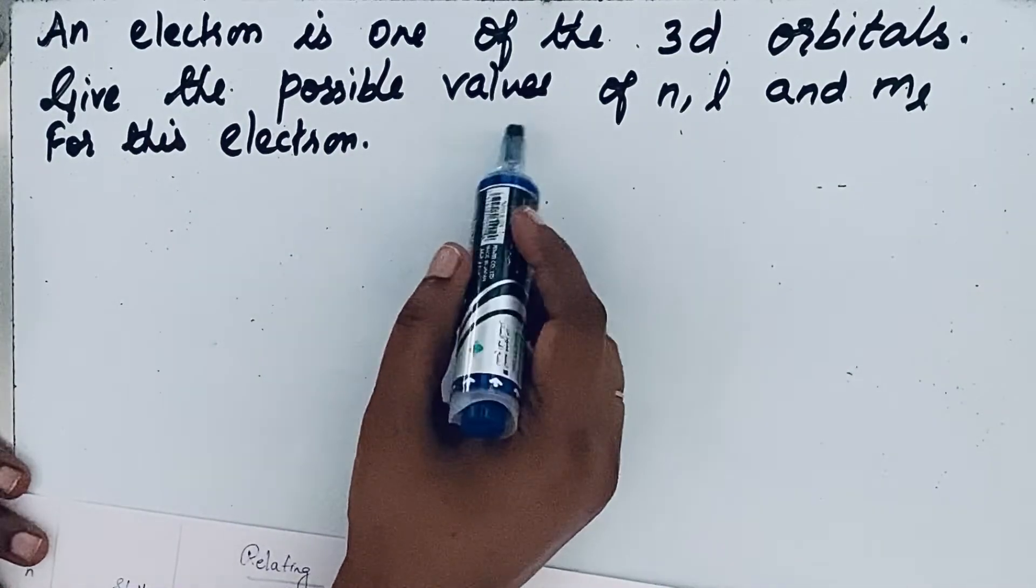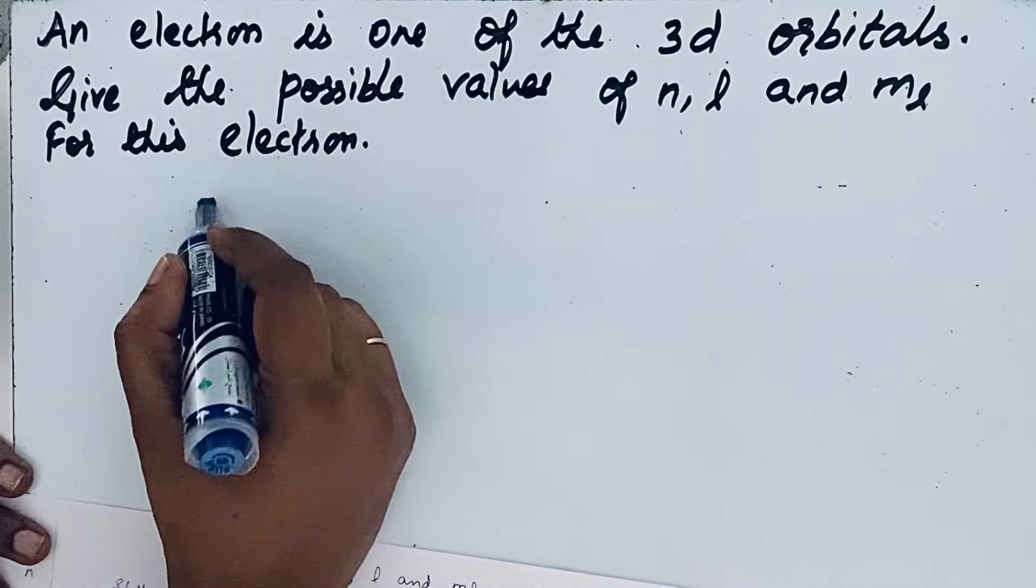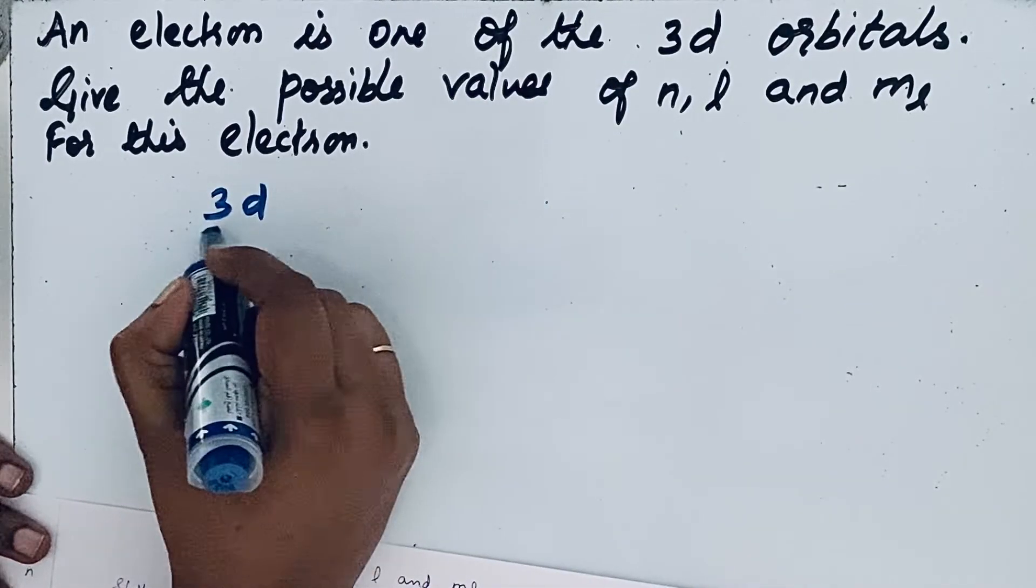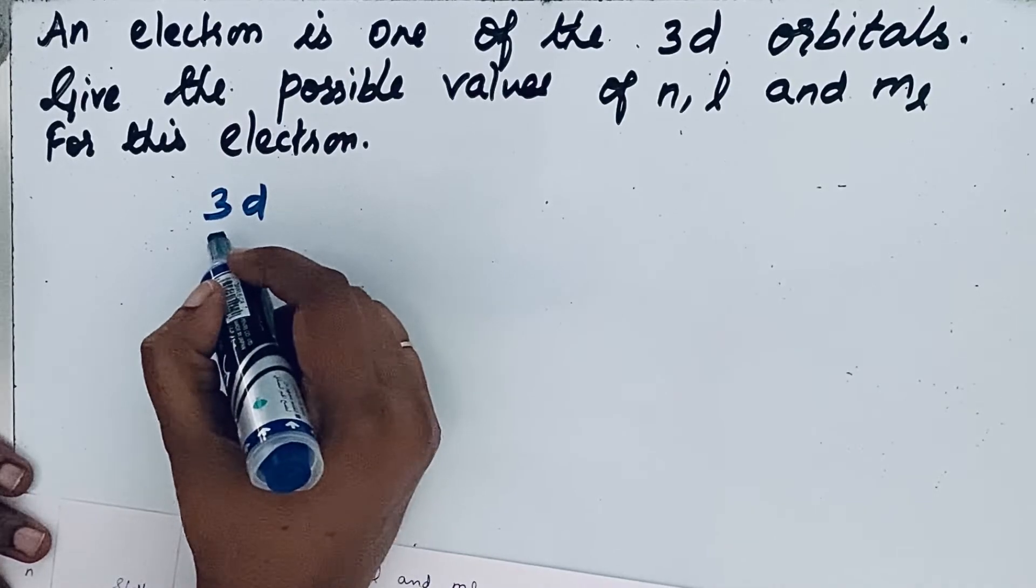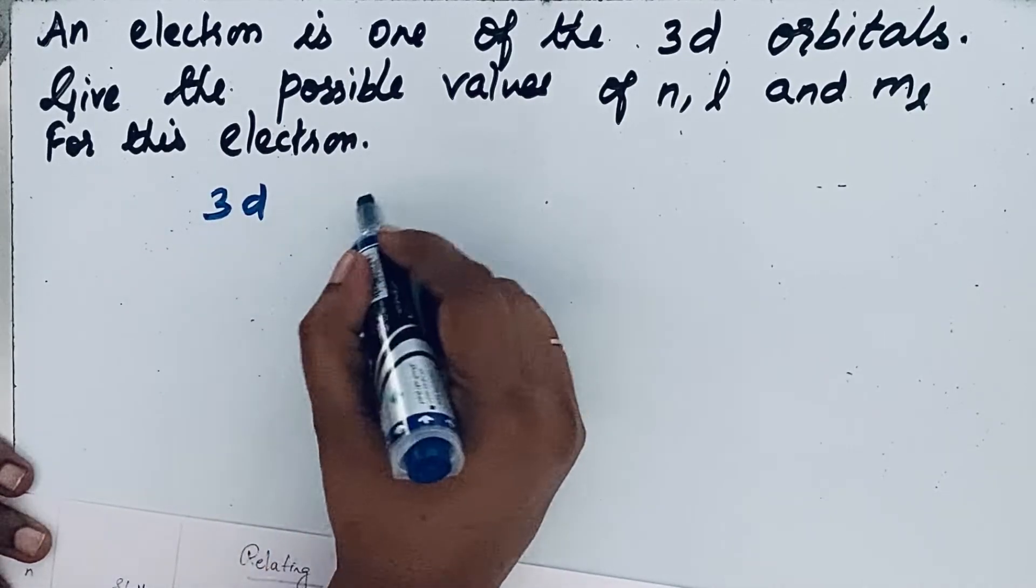Let us come to the question here. Here the electron is in the 3d orbital. So 3 stands for m shell, third shell. So n equals 3.